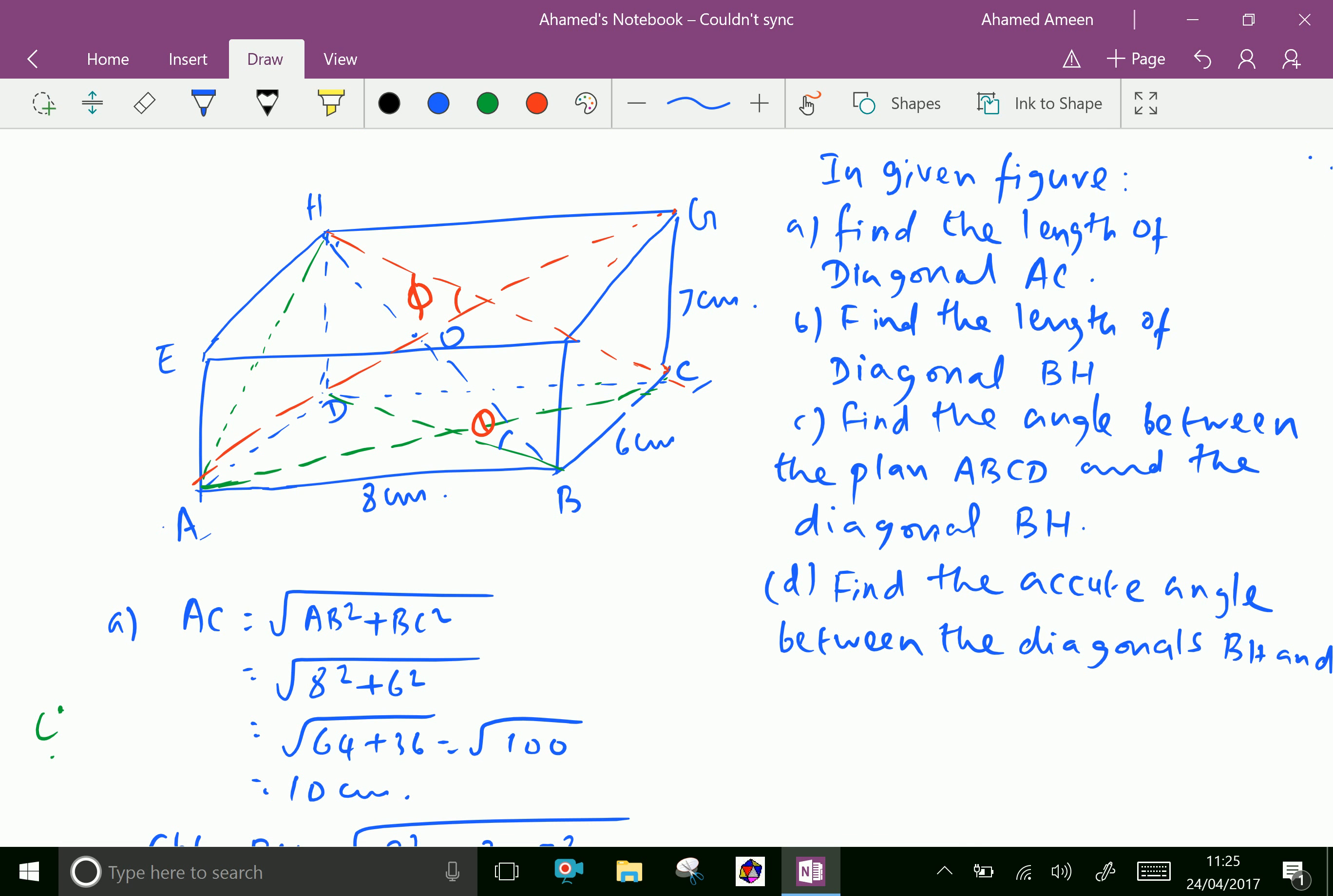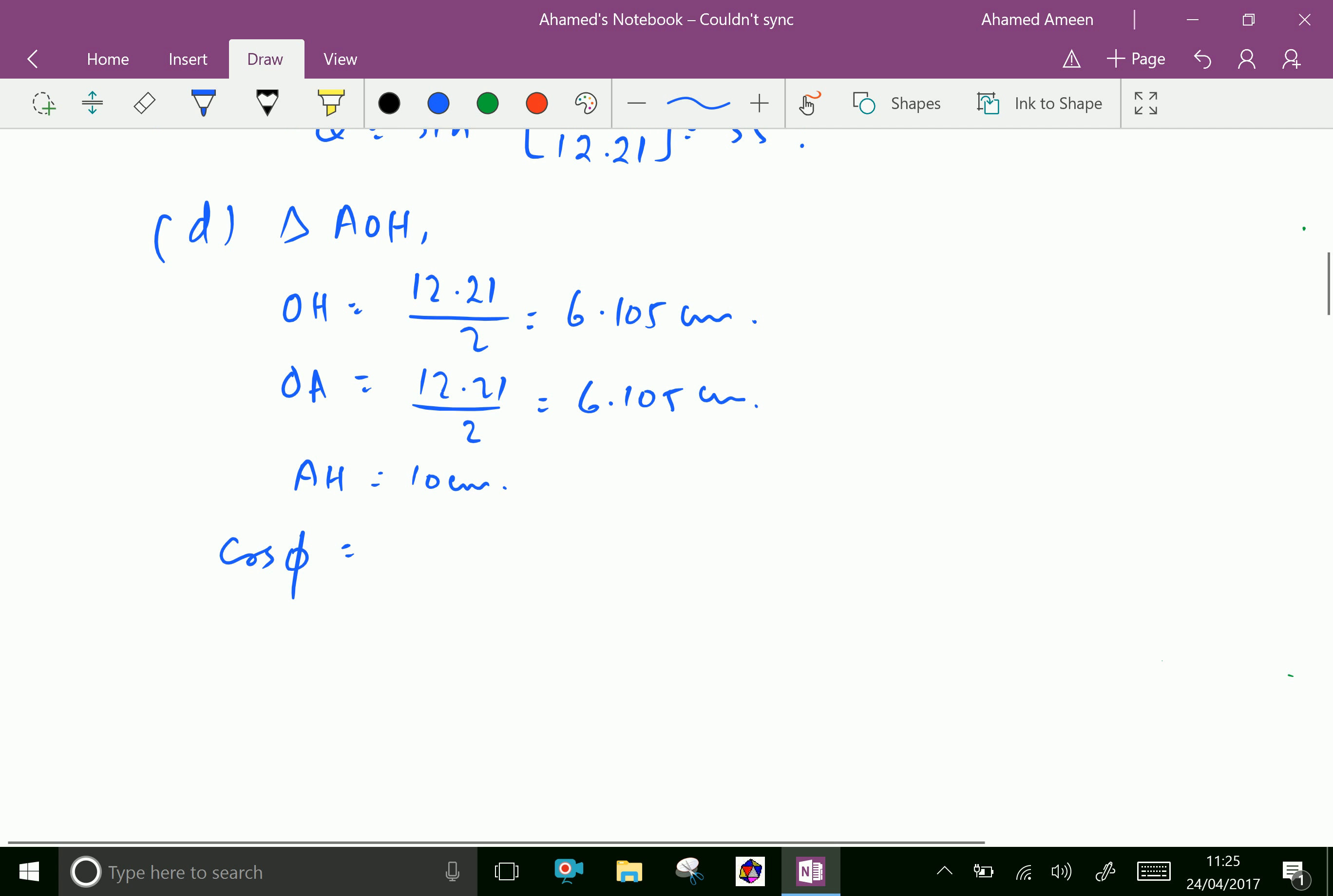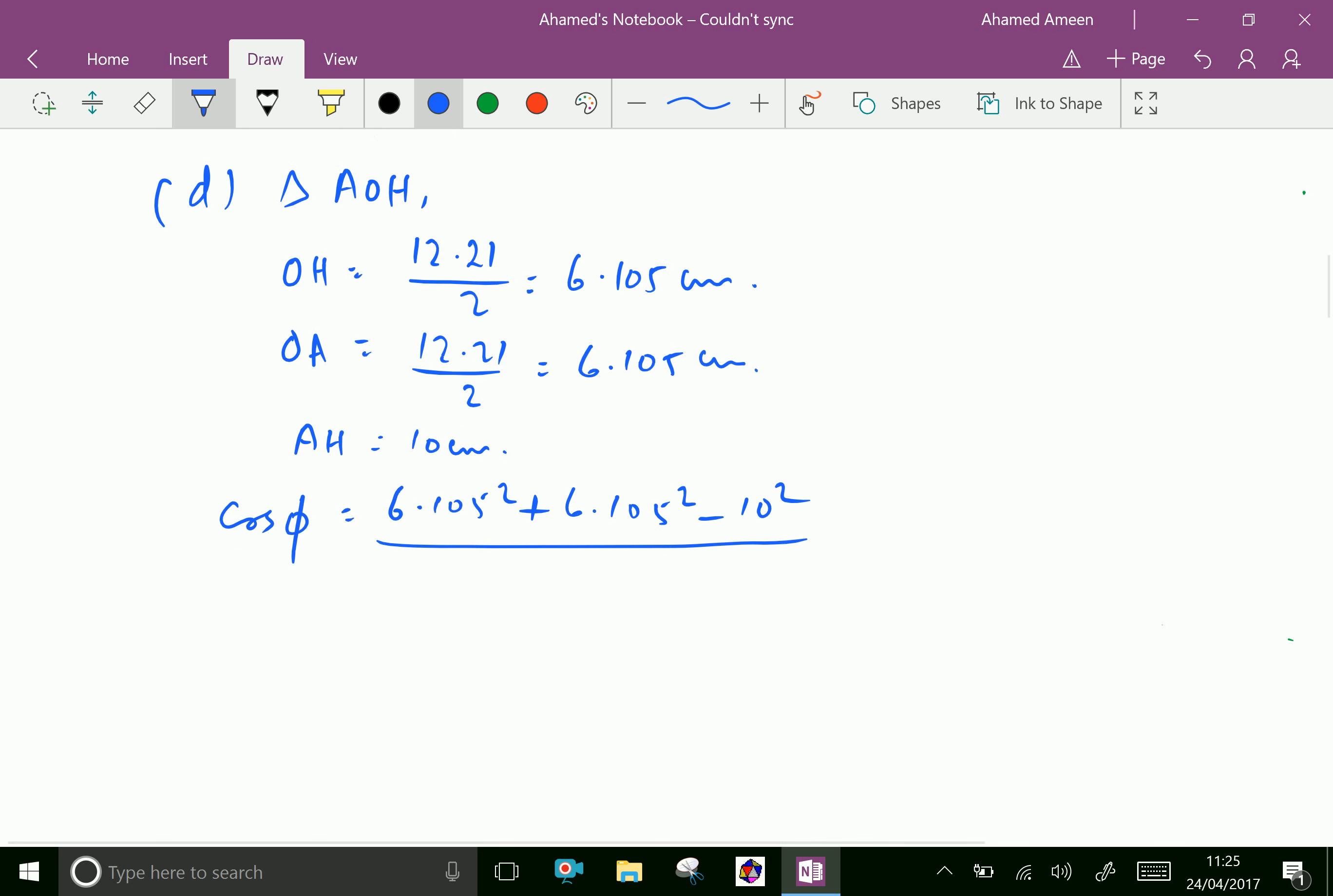AH equals 10 centimeters. Now using the cosine formula, cos phi equals 6.105 squared plus 6.105 squared minus AH squared, that is 10 squared, over 2 times 6.105 times 6.105.